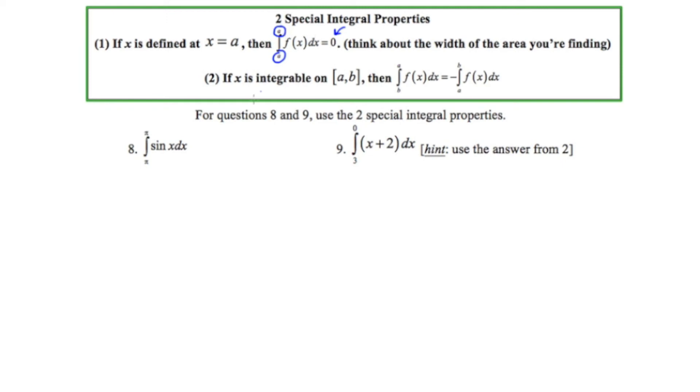Having said that let's skip to number eight. It says to find the area under the sine curve from pi to pi. Once again because these two values are the same the region that we're looking at will have no width and the area is going to be zero. Let's take a look at the second property.